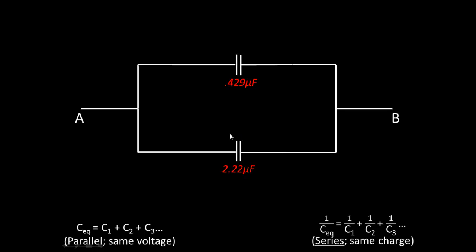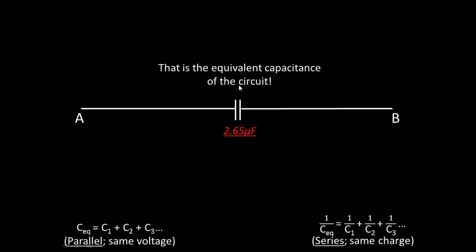Now we have two capacitors left and they're in parallel with each other, which means we can just go ahead and add them: 0.429 microfarads plus 2.22 microfarads equals 2.65 microfarads. We can go ahead and replace these two capacitors with one single equivalent capacitor for the whole circuit. The equivalent capacitance of this circuit is 2.65 microfarads.